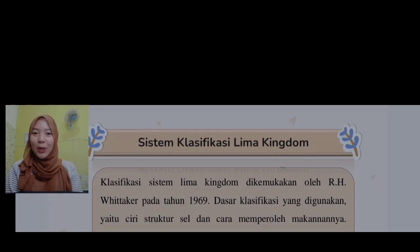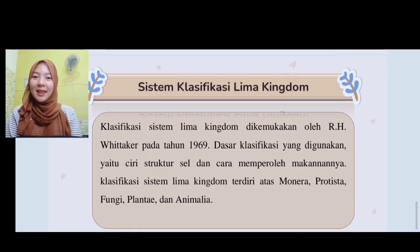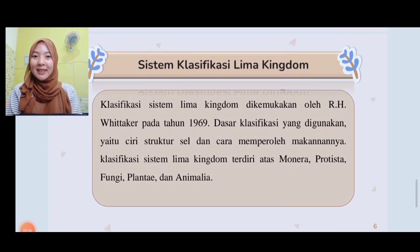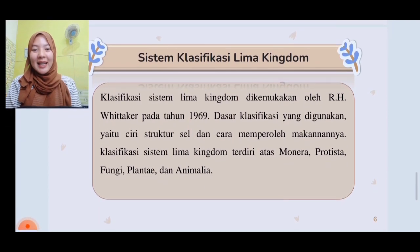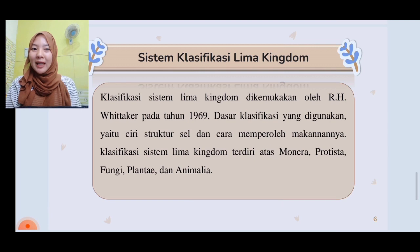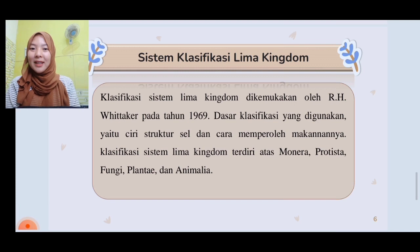Untuk materi yang terakhir, kita akan membahas tentang sistem klasifikasi Lima Kingdom. Klasifikasi sistem Lima Kingdom ini dikemukakan oleh R.H. Whittaker pada tahun 1969. Adapun dasar klasifikasi yang digunakan yaitu ciri struktur sel dan cara memperoleh makanannya. Dan klasifikasi sistem Lima Kingdom ini terdiri atas: Monera, Protista, Fungi, Plantae, dan Animalia.